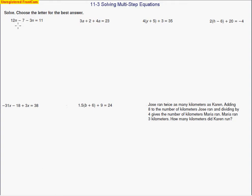So we want to combine some like terms. Looking at this equation, we've got 12n minus 7 minus 3n, and it all equals 11. I like to draw a line down the equal sign — that helps remember to do the same operation on both sides of the equal sign to keep it in balance.